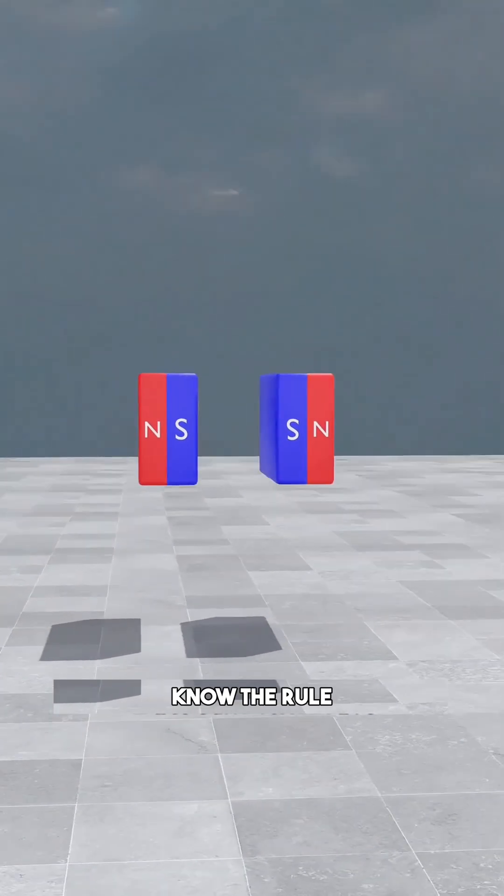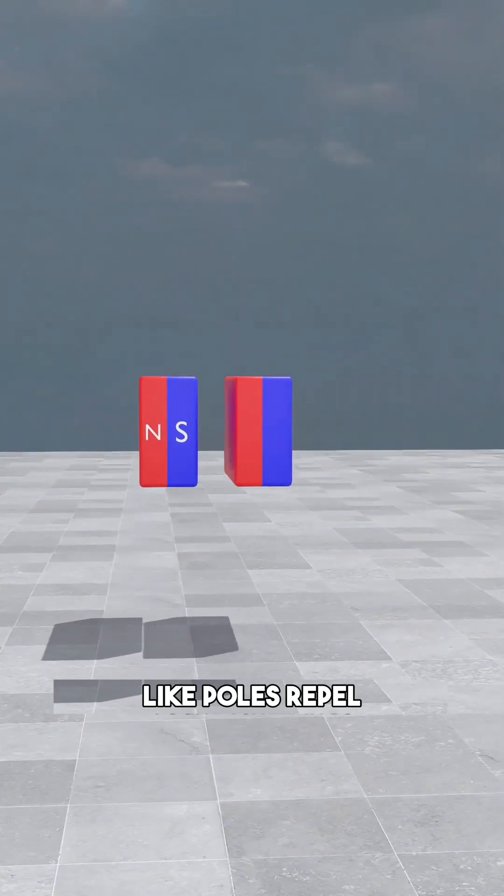Think about two simple magnets. We know the rule. Like poles repel, while opposites attract.